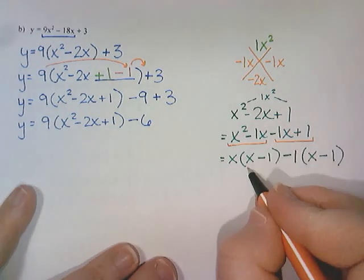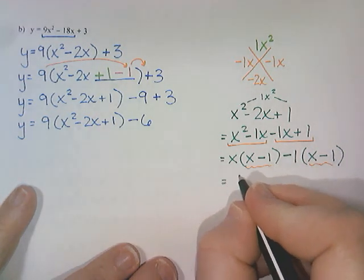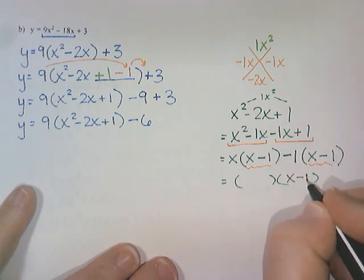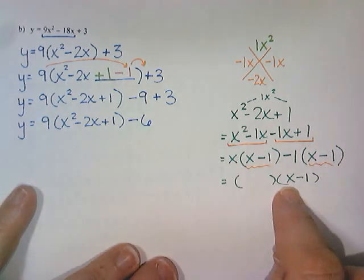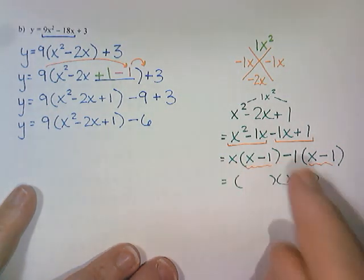Since these brackets are the same, that tells me that I've done this correctly. And it also tells me that in the original multiplication question, that second bracket was an x - 1. The first bracket comes from the other parts in front. So x and -1.